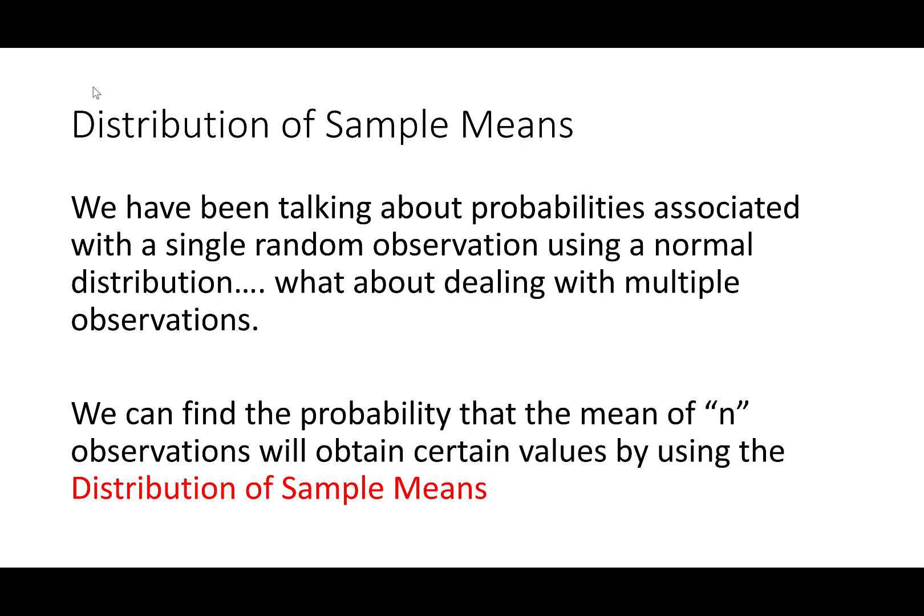When we were doing the IQ example, we asked: how likely was it that a person at random had an IQ above 120? Now what we're going to be interested in is not a single observation, but multiple observations. Imagine you and four friends decided to all take the IQ test, and you were worried about how you did collectively.